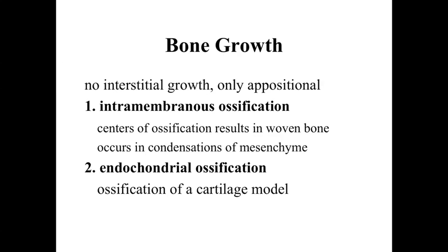The second type of bone formation is endochondral ossification. We essentially use a cartilage model and ossify it — adding bone structure to it, converting a cartilage model into a bone model.